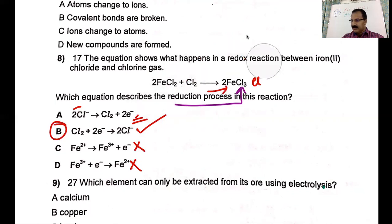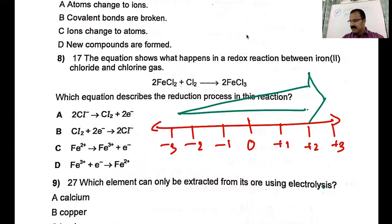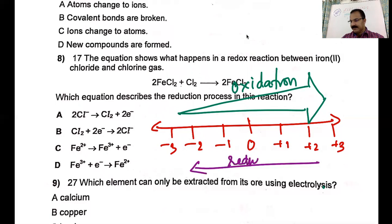Let me explain redox using a number line: minus three, minus two, minus one, zero, plus one, plus two, plus three. When charges increase — moving in the positive direction — that is oxidation. Increase in oxidation number is oxidation, and decrease is reduction. So if minus two becomes minus one, or zero becomes plus one — these are all oxidation. Any decrease in oxidation number is reduction. That's an easy way to remember.